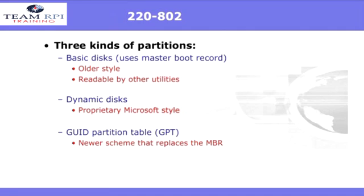There are three basic kinds of partitions. Either basic disks — this uses a master boot record — dynamic disks, which are proprietary to Microsoft, or a GPT, or GUID partition table. This is a newer scheme that replaces the old master boot record.